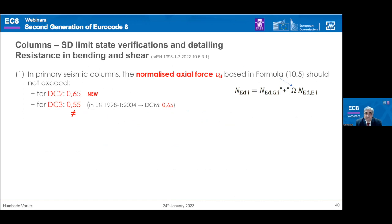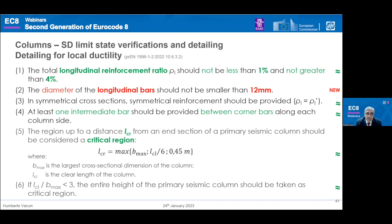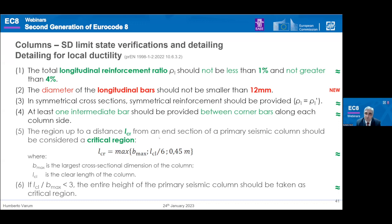Regarding the normalized axial force, limit values are slightly changed, though with the new definition of axial force for design these limits are sufficiently high that they will likely not control design in the majority of structures. For detailing of local ductility in columns, minimum and maximum reinforcement is retained. A new rule introduces a minimum diameter of 12 mm for longitudinal bars in columns — not a big change since this is already common in practice. Other rules are essentially kept.